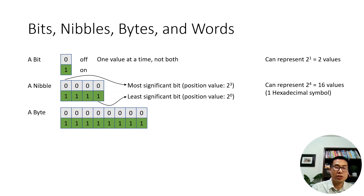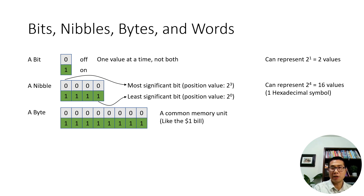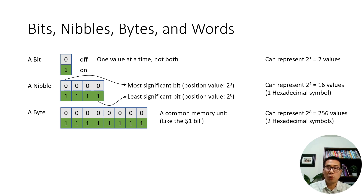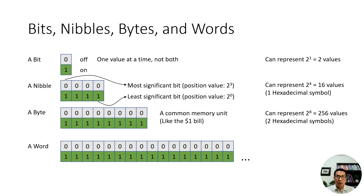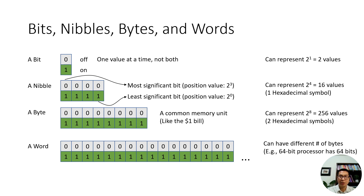Another common unit is a byte, which is two nibbles or eight bits. This is the most common memory unit — like the one-dollar bill in a money system. It can represent 2 to the power of 8, or 256 different values, but only one at a time. It corresponds to two hexadecimal symbols. A word in computers is a multiple of bytes — it could be two bytes, three bytes, or 64 bytes. For example, a 64-bit processor has 64 bits, which is 8 bytes.